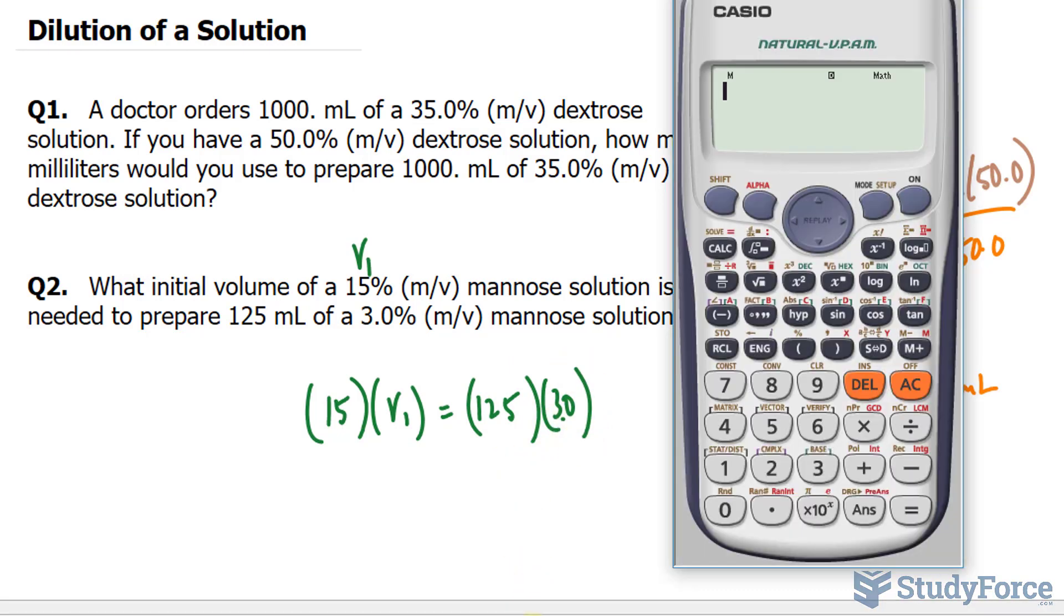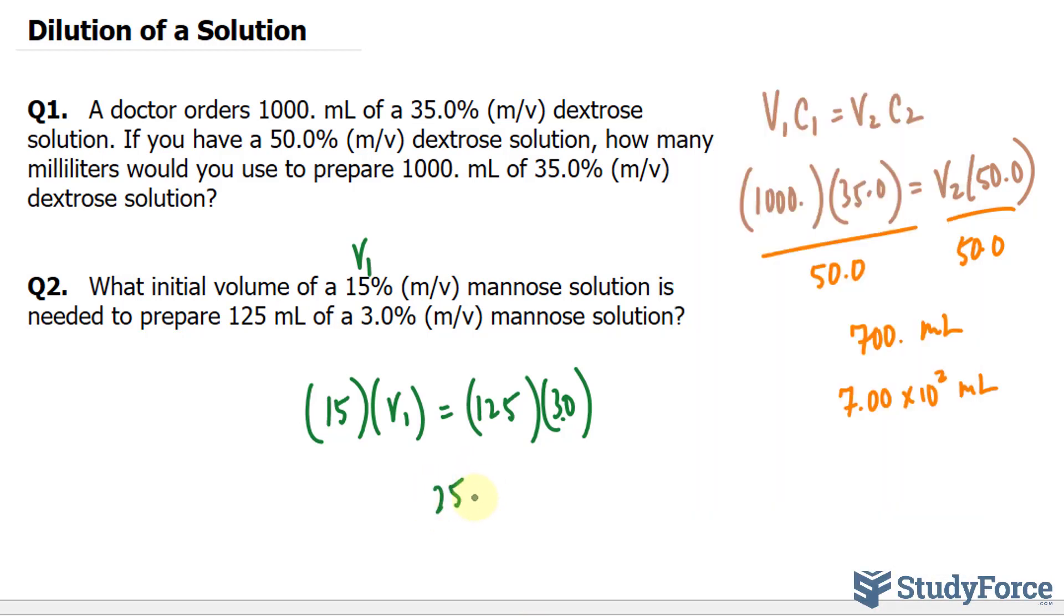We need our final answer to two significant figures. So 125, I'm multiplying the right side, times 3.0, divided by 15, and we get 25. 25 to two significant figures, that's good enough, and the units should be mL.